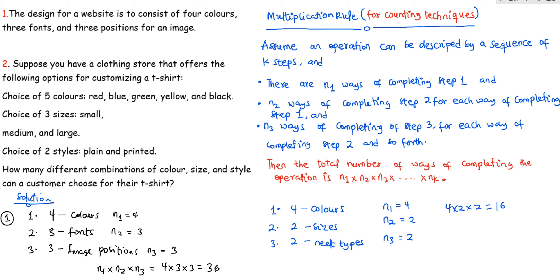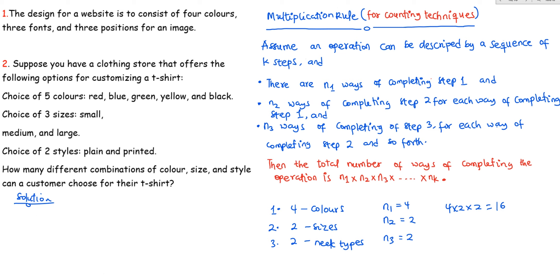Now let's look at example two. Suppose you have a clothing store that offers options for customizing a shirt. You have a choice of five colors — red, blue, green, yellow, and black — a choice of three sizes — small, medium, and large — and a choice of two styles — plain and printed. How many different combinations of color, size, and style can a customer choose? We have three steps: color, size, and style.